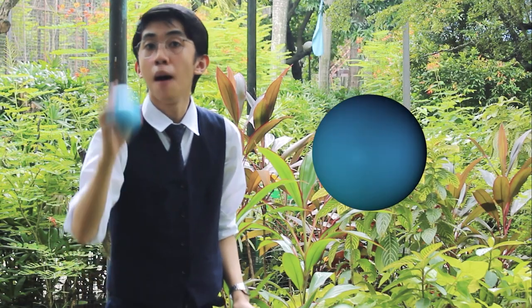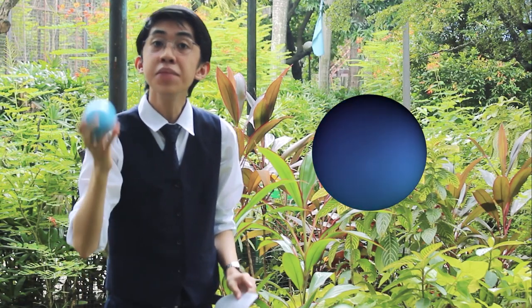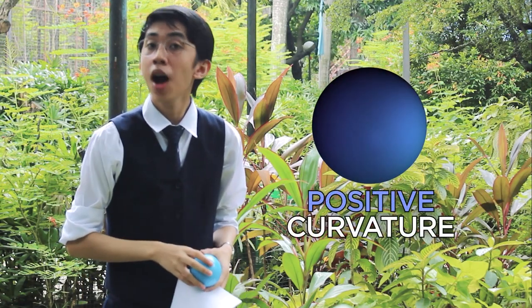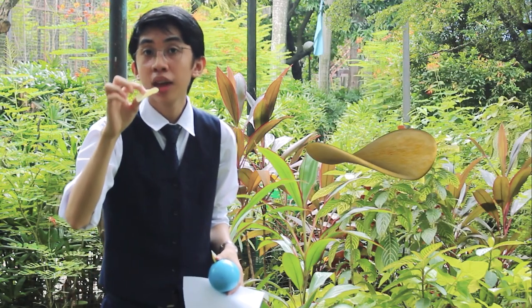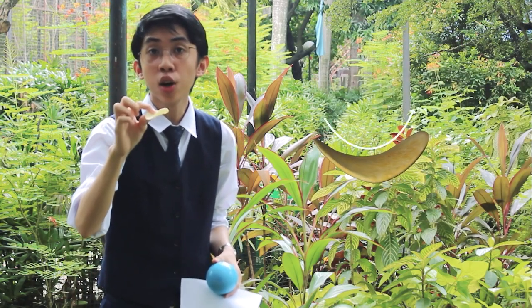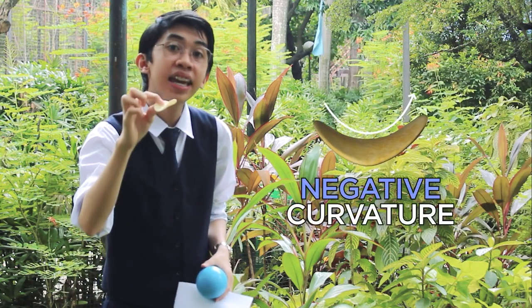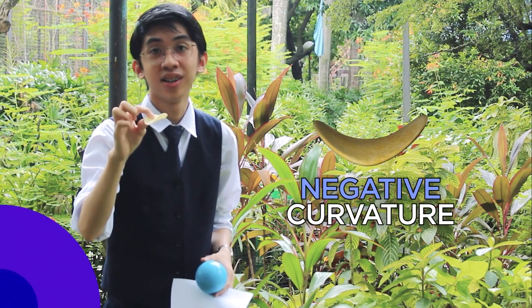However, a ball curves outward, meaning it has a positive curvature. While a chip that curves inward has a negative curvature.